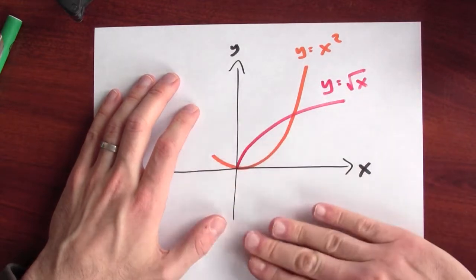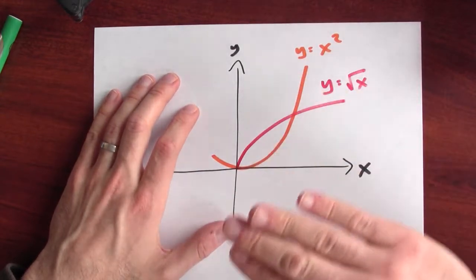And let's take that region and rotate it around the x-axis. When I take a region in the plane and rotate it around an axis, I get a solid of revolution. And the question is, what's the volume of that solid?